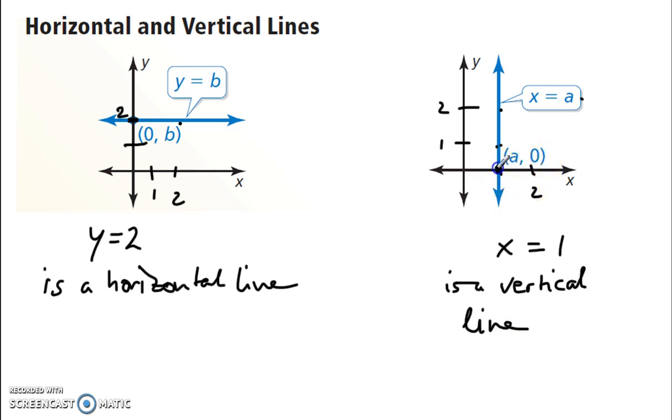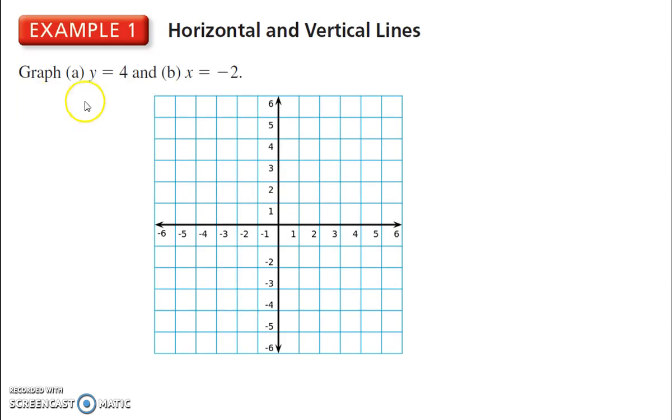All right, notice that that point where it crosses the x-axis has a y-coordinate of 0. So, really, we just need the x-coordinate for that point. Here, the y-coordinate is B and the x-coordinate is 0 because x is 0 right there. So, let's look at graphing these, graphing a horizontal and a vertical line.